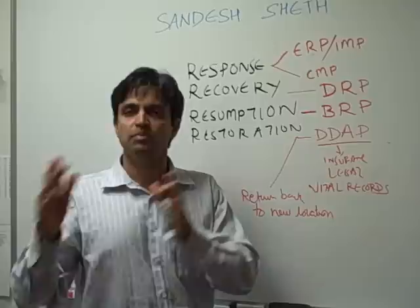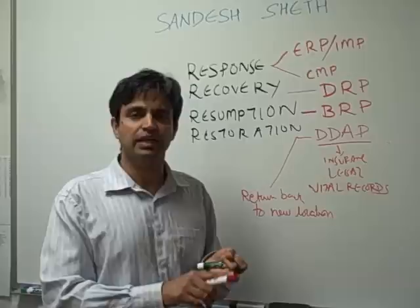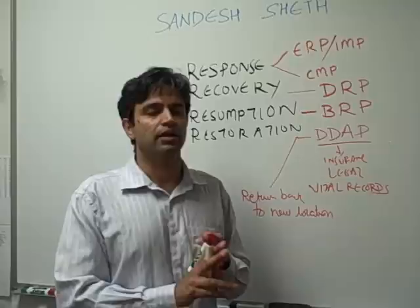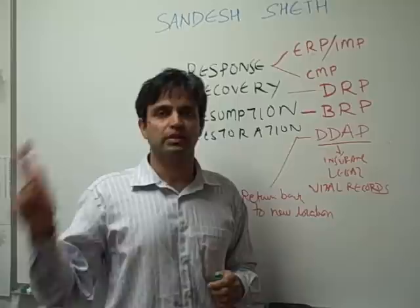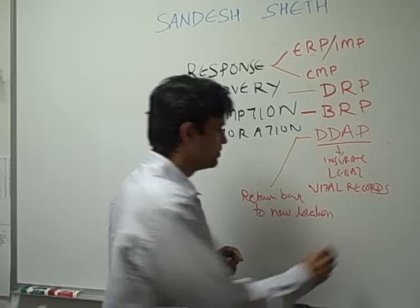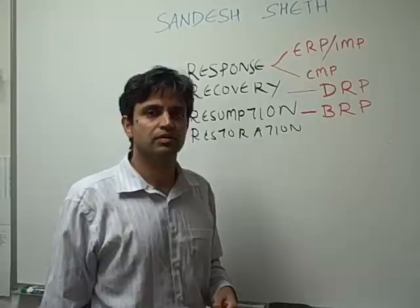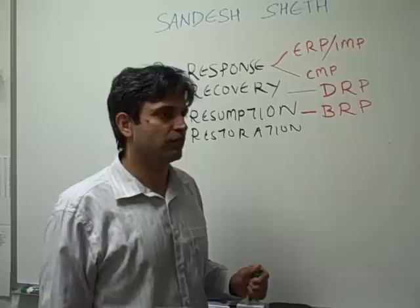It is similar to a disaster recovery plan, but in this case we have the option to choose the time, we have all the teams in place, and we have the luxury of recovering the operating systems and applications, and just waiting for the database to be shifted from that location to the new location. The comprehensive VCMS would address all four phases and all the plans in each phase. The next webcast will cover the three-letter abbreviations: RTO, RPO, WRT, and MTD. Thank you for listening.